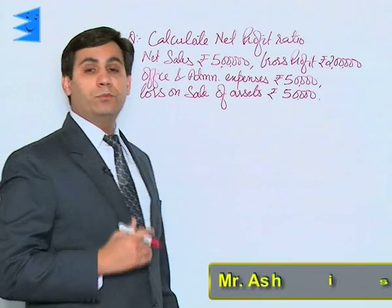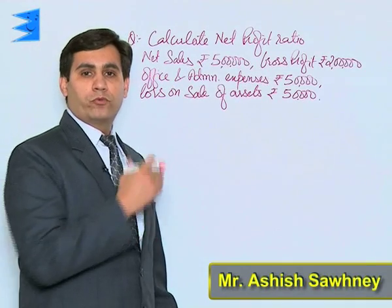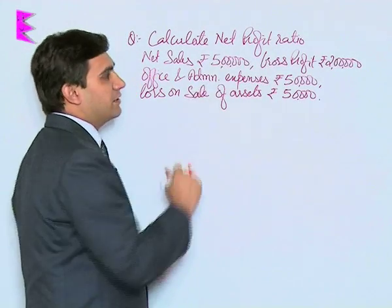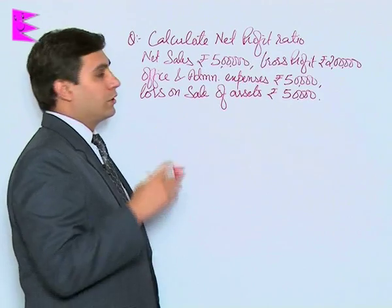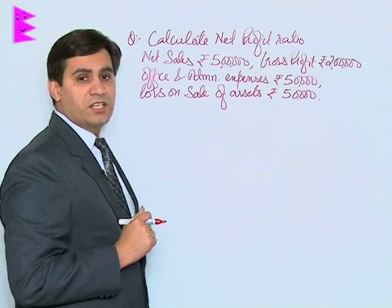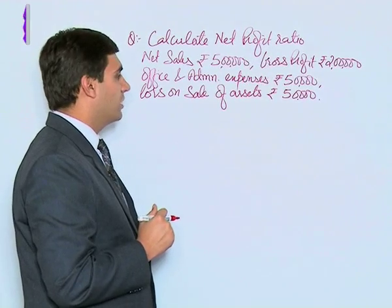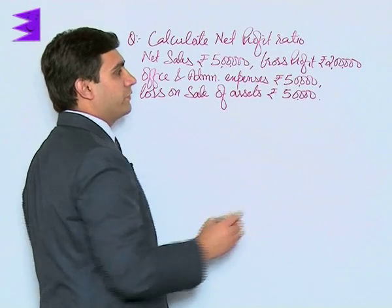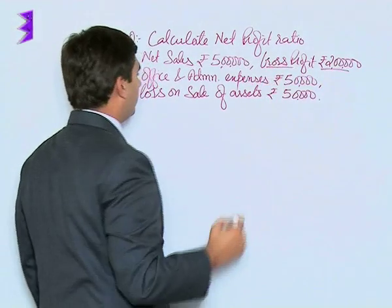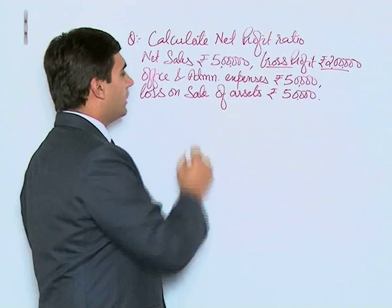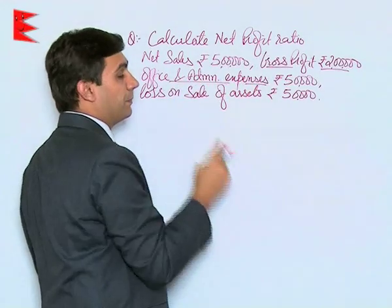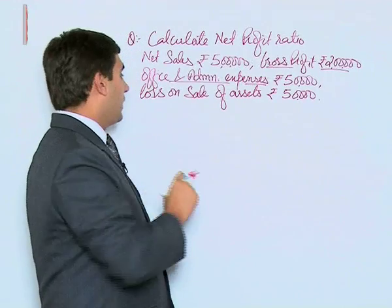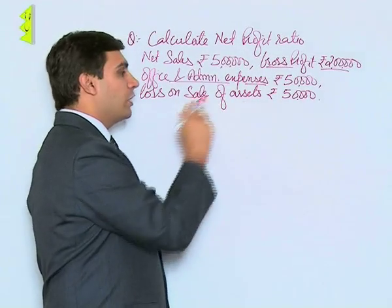We are required to calculate the net profit ratio from the information given. The information includes net sales, gross profit, office and administration expenses, and loss on sale of assets. We are given gross profit, and we are also given office and administration expenses — remember, it is a part of operating expense — whereas loss on sale of asset is a non-operating expense.